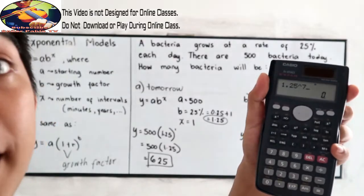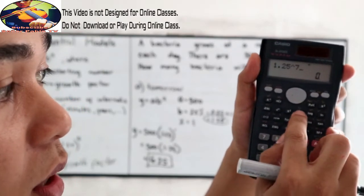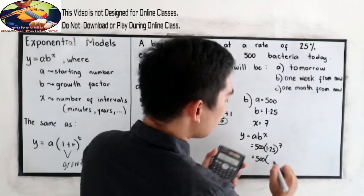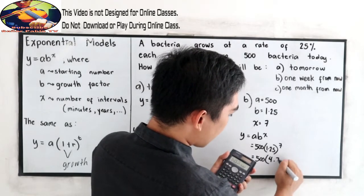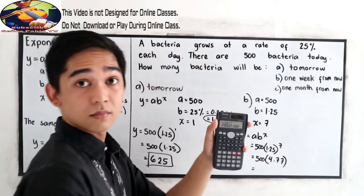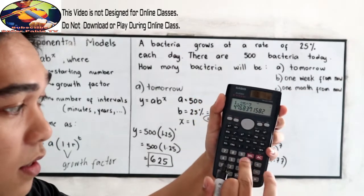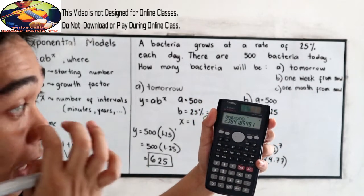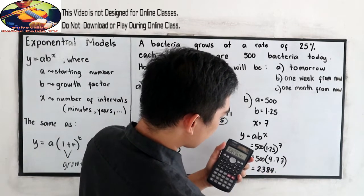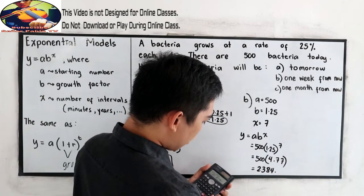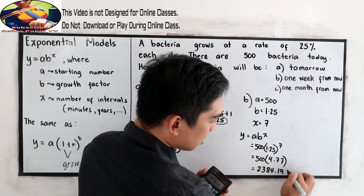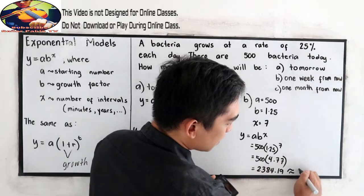To find the result, use the exponent symbol on your calculator: 1.25 raised to 7 is 4.77. Then multiply by 500. That gives us 2,384.19, so our estimated answer is approximately 2,384 bacteria one week from now.